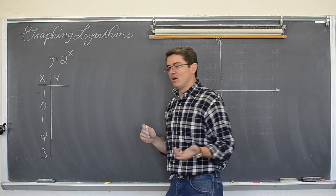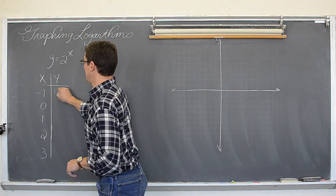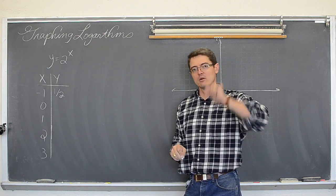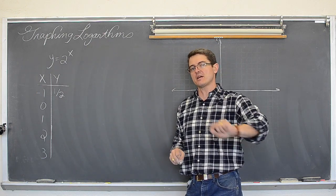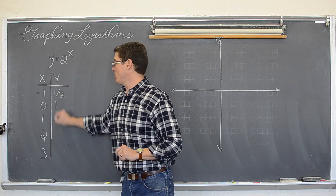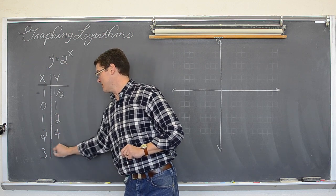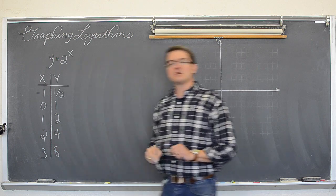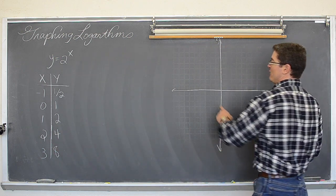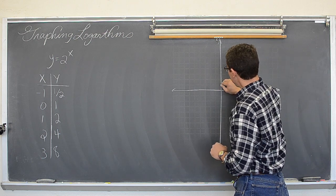That is the easiest thing to figure out. Two to the negative one is one half because two to the negative one power will move that base down to the bottom. Anything with a zero power is equal to one. Two to the first is two. Two to the second is four. Two to the third is equal to eight. So we have negative one, one half.